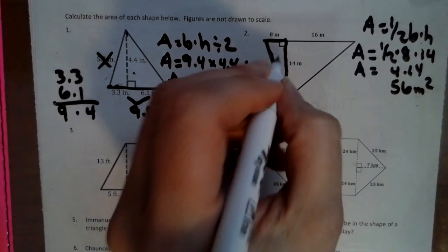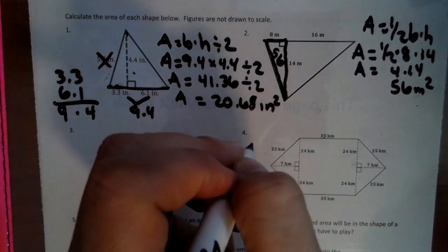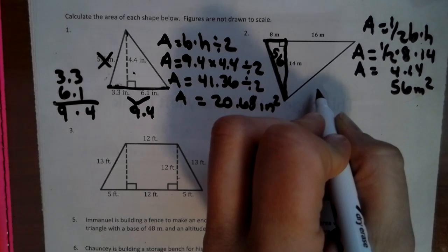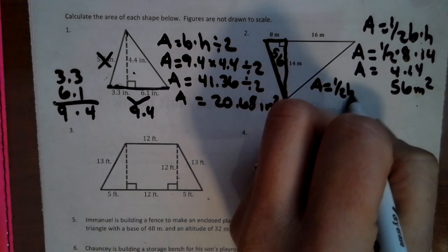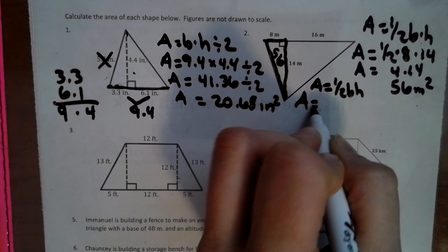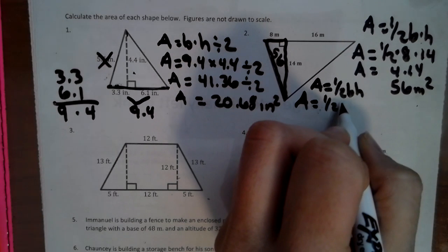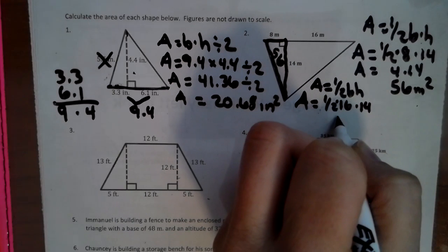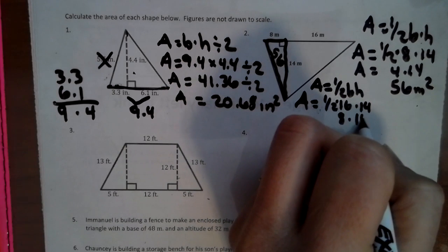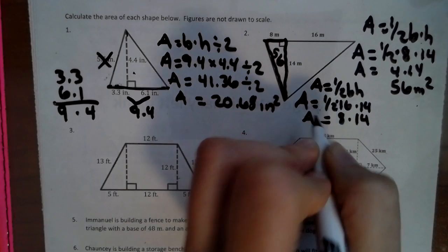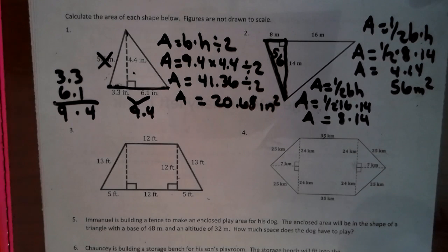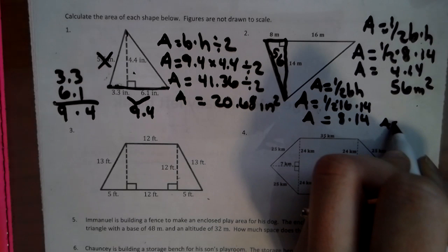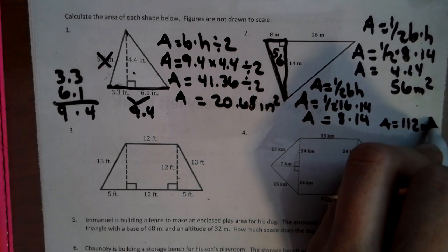So half of 8 is 4, and 4 times 14 is 56 meters squared. And now that is just for this one. That's the 56 side. So now I'm going to do the 16 by 14. So I'm going to go area equals half base height. Area equals half of 16, and we're going to do 8 times 14, and we get 112.